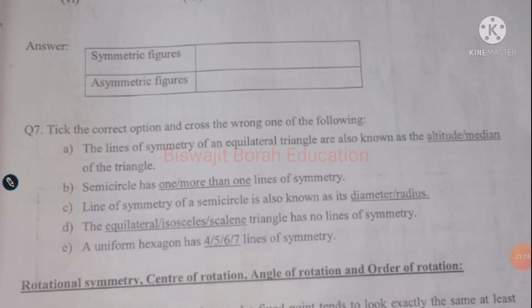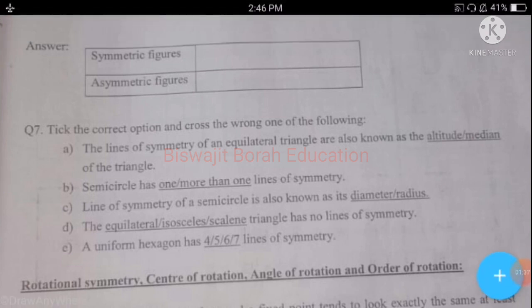Part b: a semicircle has one or more than one line of symmetry. A semicircle has only one line of symmetry. So 'one' is correct and 'more than one' is wrong — cross that out.